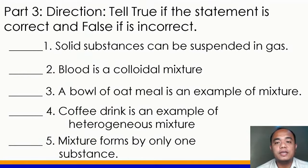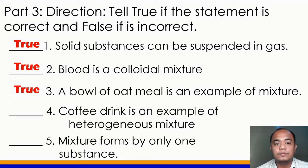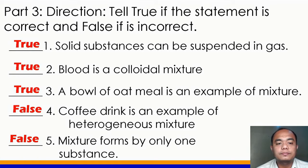Part 3. Tell true if the statement is correct and false if it is incorrect. Number 1: solid substances can be suspended in gas — true. Number 2: blood is a colloidal mixture — true. Number 3: a bowl of oatmeal is an example of a mixture — true. Number 4: coffee drink is an example of a heterogeneous mixture — false. Number 5: a mixture forms by only one substance — false. What's your score, class? I'm sure you got a very high score on this activity.